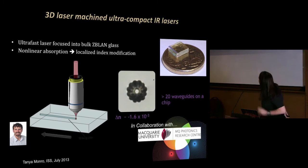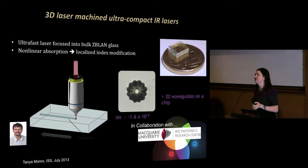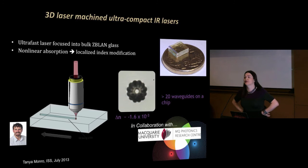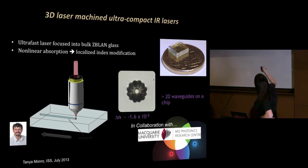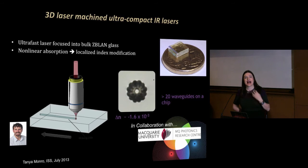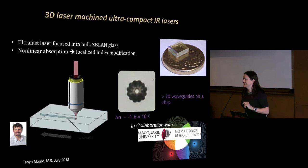The first thing I'd like to show you is a new class of laser recently developed in our labs. It's the simplest device I can explain that takes the power of these new glasses and turns it into something I honestly believe is a disruptive technology. What you can see is a little slab — scale shown by a $1 coin — of a glass called Z-Blan, a fluoride glass that transmits light up to about six microns in wavelength. In collaboration with colleagues at Macquarie University, we discovered that if we hit this glass with femtosecond pulses of light — very short bursts of very intense light — we can change the density of the glass, which changes its refractive index.